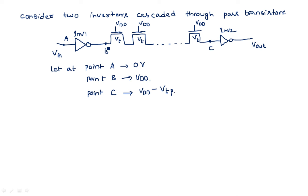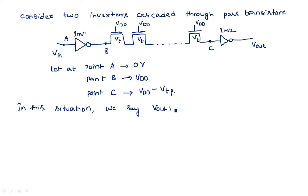Because of this degradation, even if logic 1 is applied at B, it may be treated as logic 0 when it appears at point C. After passing through inverter 2, the output would again be 1. In this circumstance we say Vout1 equals Vout2. So for input voltage VDD or VDD minus VTP, we analyze the inverter with this condition.